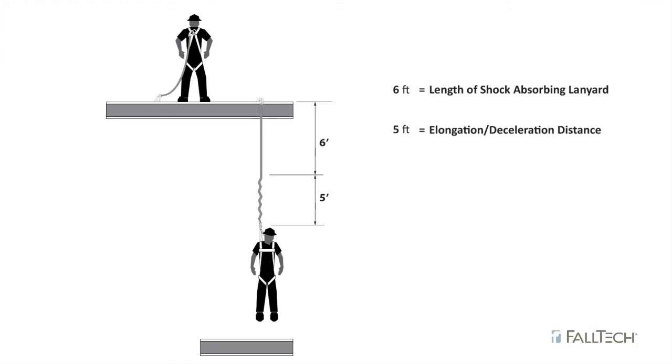The deceleration distance, which is the maximum allowable amount of energy absorber that may pay out during a fall event. You will then need to take into account harness stretch and shifting of the D-ring and the height of the dorsal D-ring.